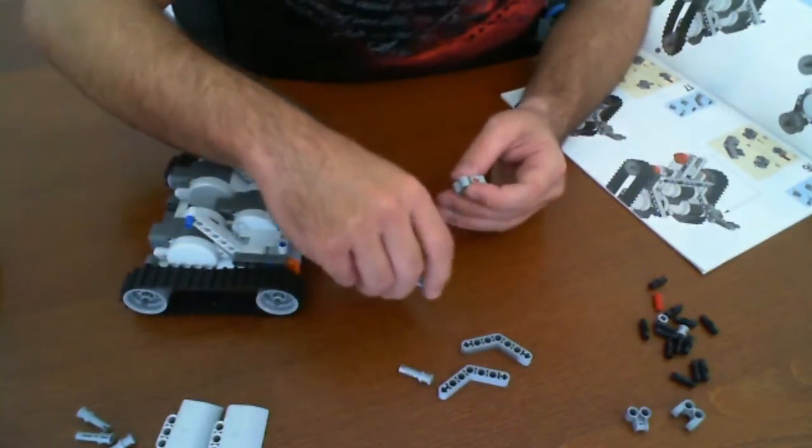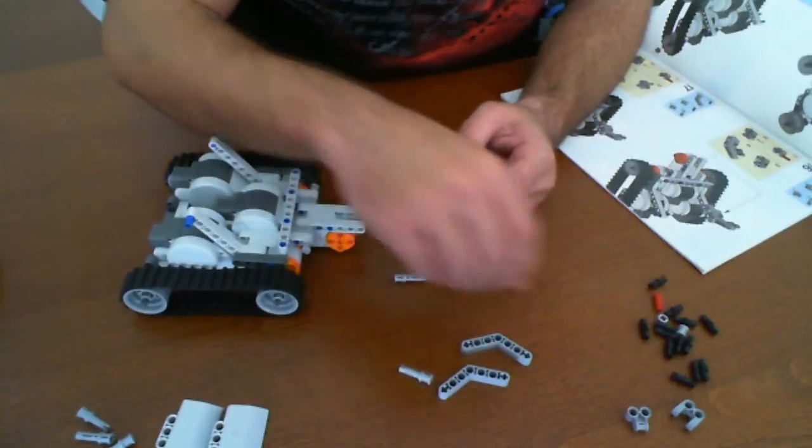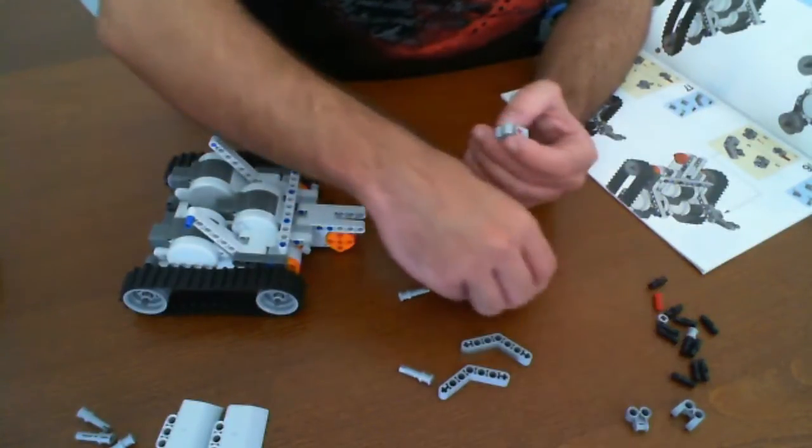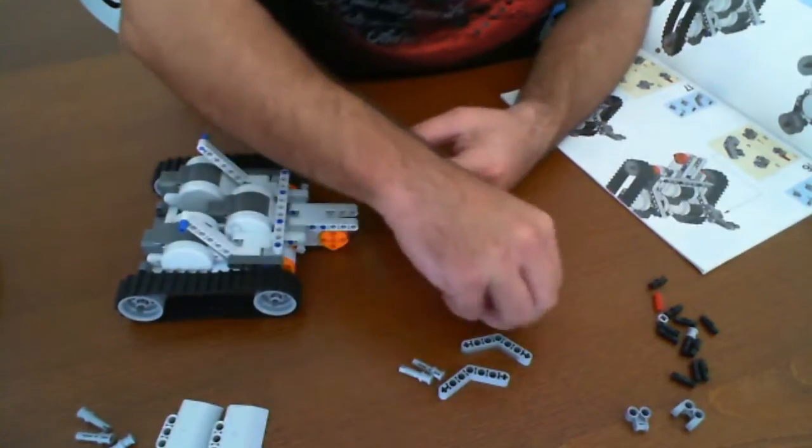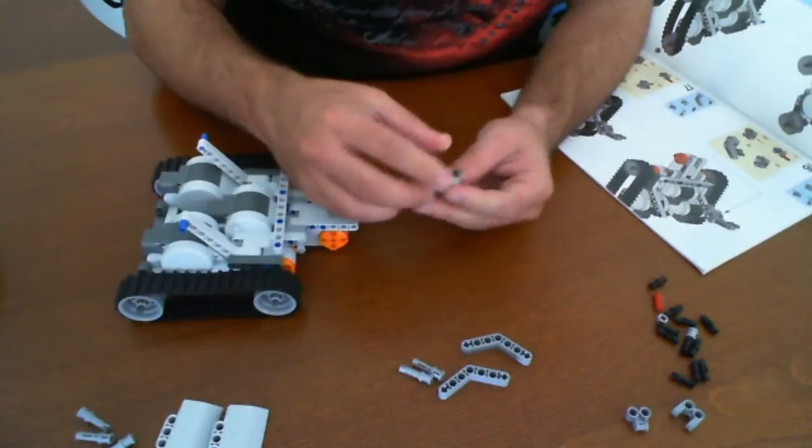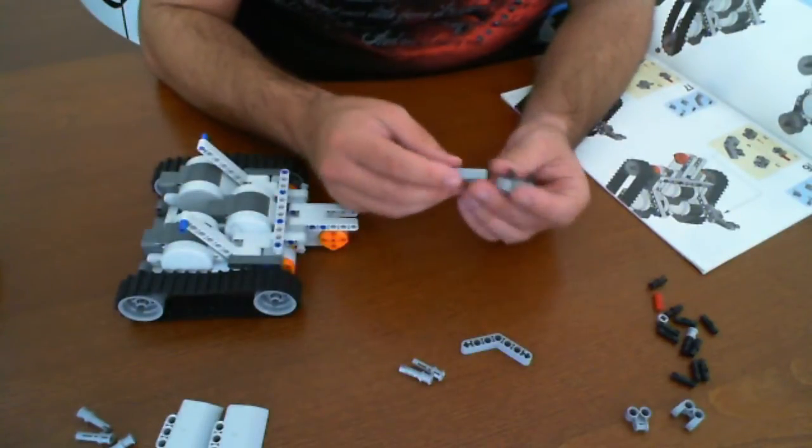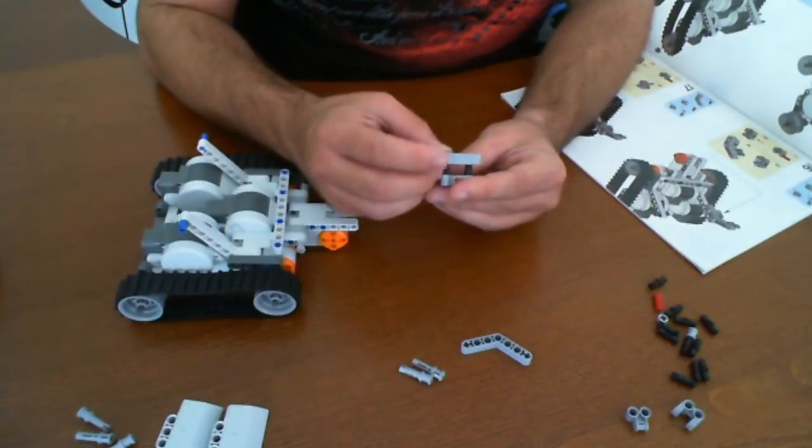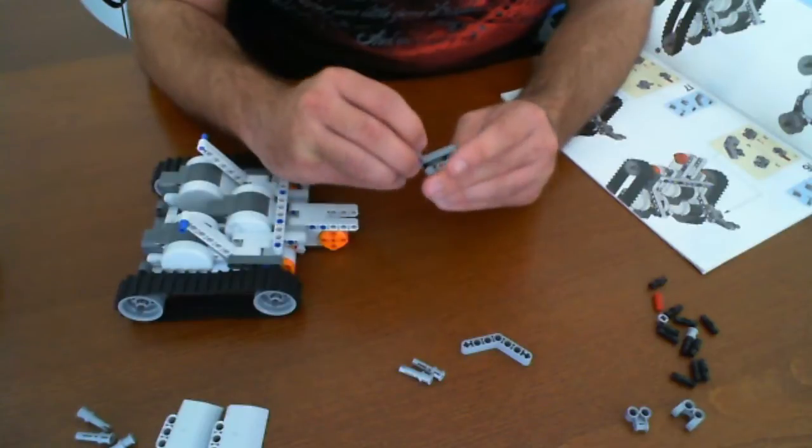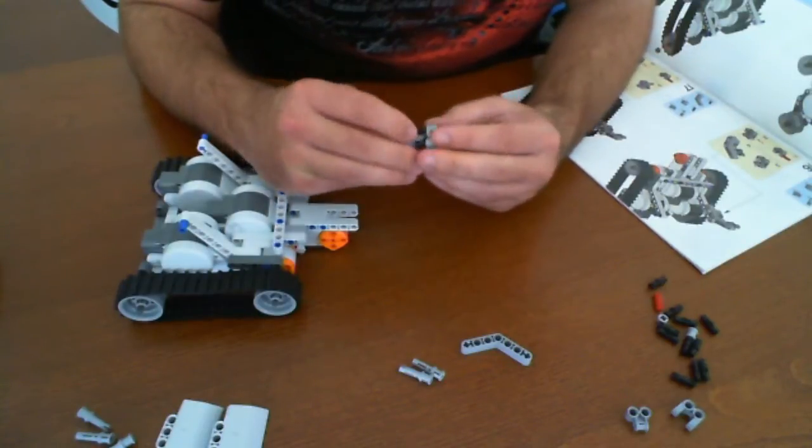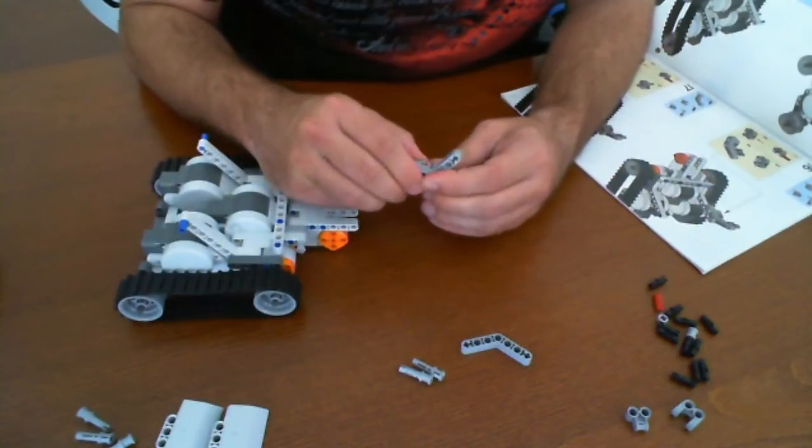Next step is that we're going to take these. Oh, we forgot we need two black connectors again. Those black connectors are going to go connected to either side, here and here. So that's good. And we're going to take one of these and just connect it as shown in the picture.